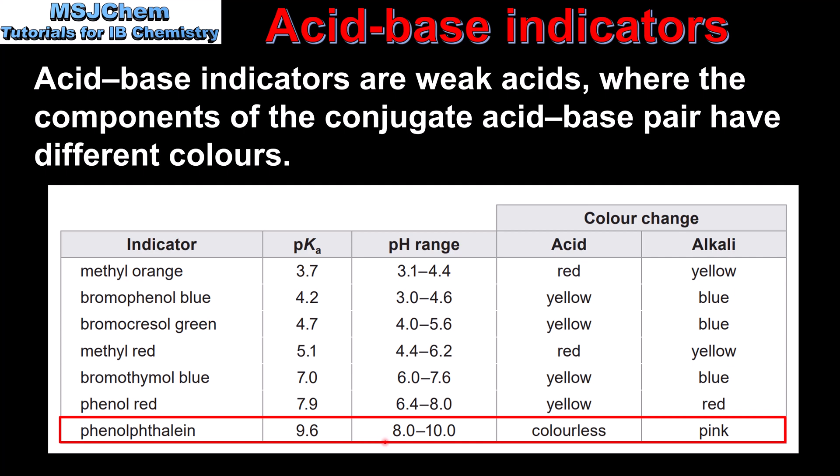The pH range is the pH within which the indicator changes color, and this is usually plus or minus 1 pH unit of the pKa value. So for phenolphthalein the pKa is 9.6, and the pH range is 8 to 10.